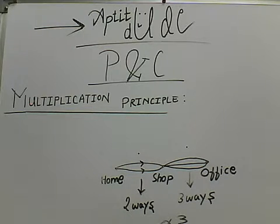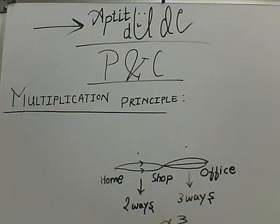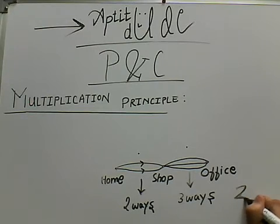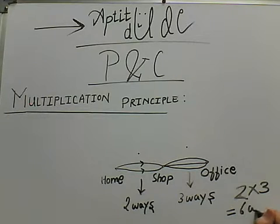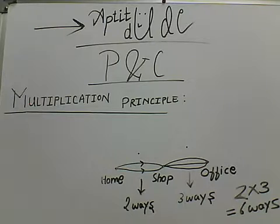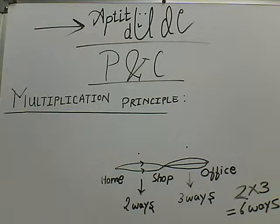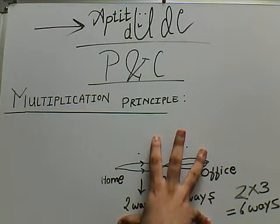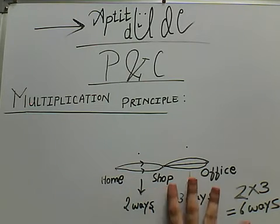So 2 into 3 equals 6 ways. Now I will once again repeat the multiplication principle: for getting the number of ways in which the whole job can be done, we need to multiply the number of ways in which the individual sub-jobs can be done.